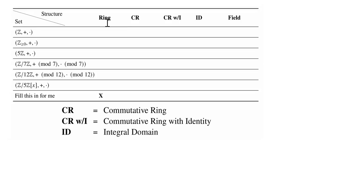Each of these is getting harder as we go from left to right. Every field is an integral domain, but not every integral domain is a field. And every integral domain is a commutative ring with identity, but not conversely. All the way up - a commutative ring with identity is a commutative ring, but a commutative ring may not have an identity. A commutative ring is a ring, and of course, not every ring is commutative.